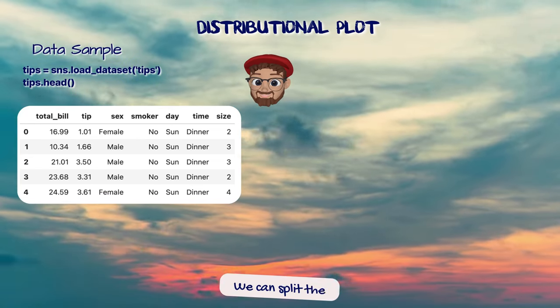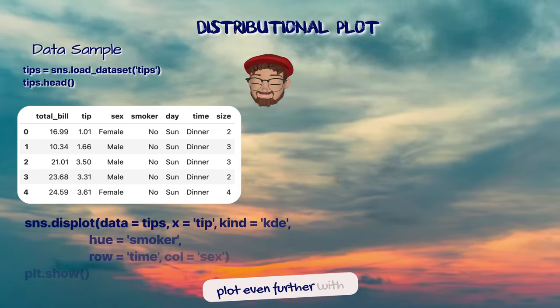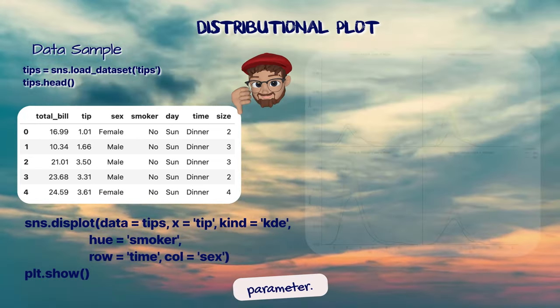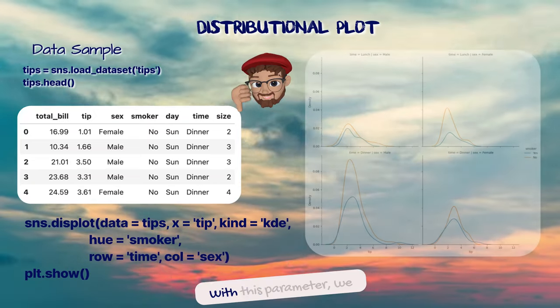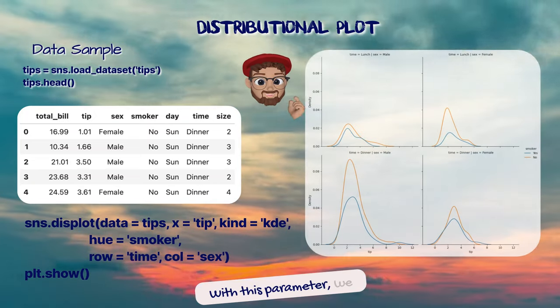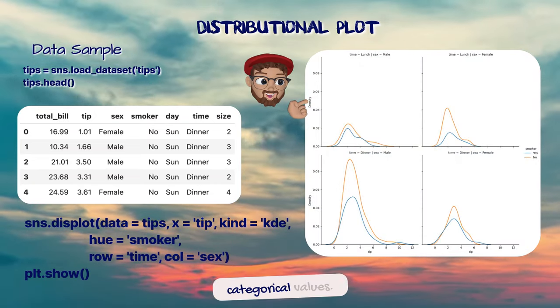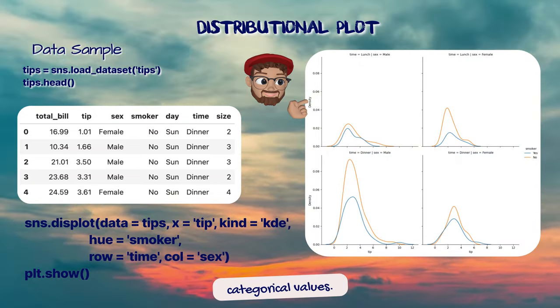We can split the plot even further with the row or col parameter. With this parameter, we produce several plots divided with a combination of categorical values.